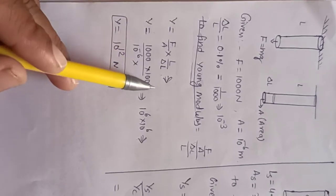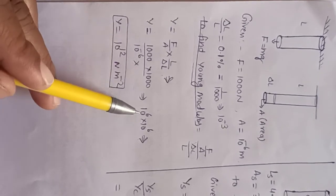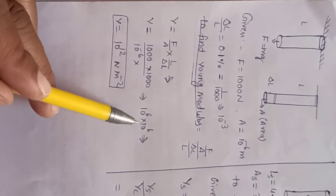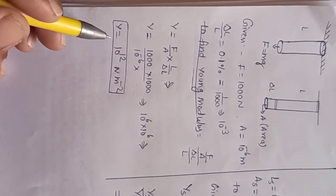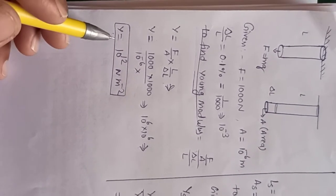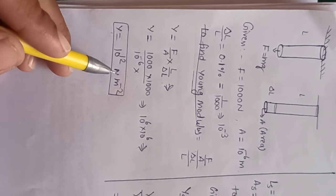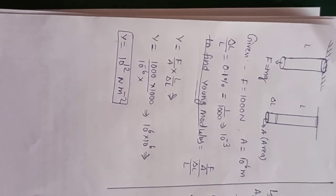So the entire value is 10 to the power 6, and the denominator value will also multiply. So total Young's modulus we get is Y equals to 10 to the power 12 Newton per meter square.